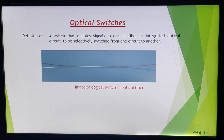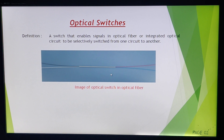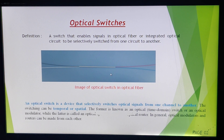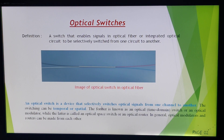This is a diagram of an optical switch in optical fiber. Two optical fibers are coming out from this path. We can selectively switch which signal should be transmitted and which should not. An optical switch is a device that selectively switches optical signals from one channel to another.